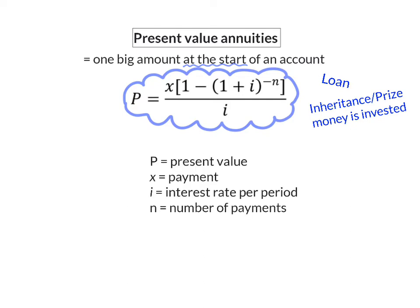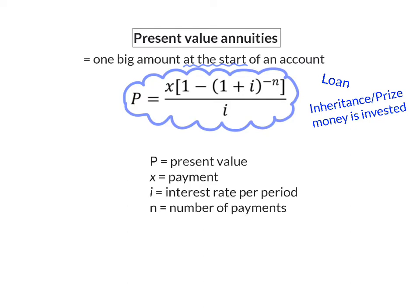In this formula, the P is for present value, X is still the payment, I the interest rate per period, and N the number of payments. Let's have a look at examples where we can use this formula.